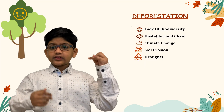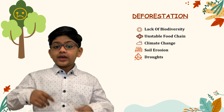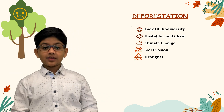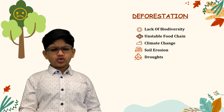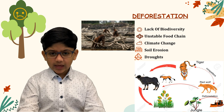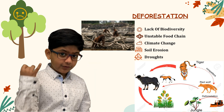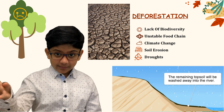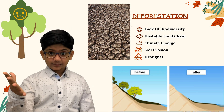Destroying the rainforest in this way is called deforestation. This will lead to lack of biodiversity, unstable food chain, soil pollution, climate change, and droughts.